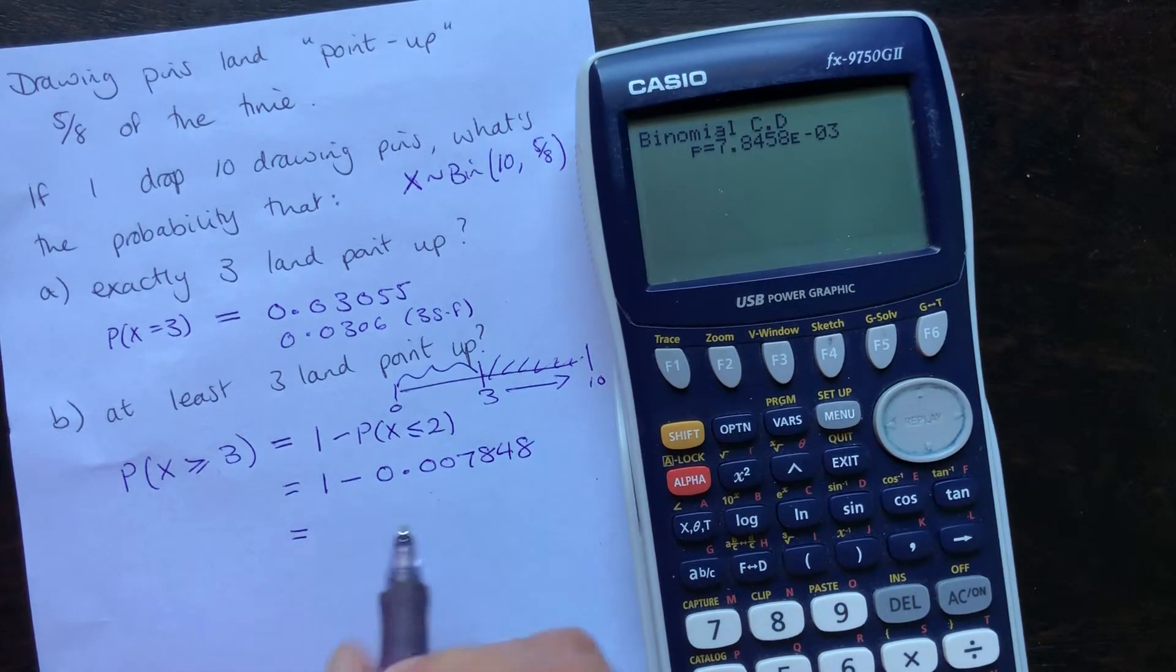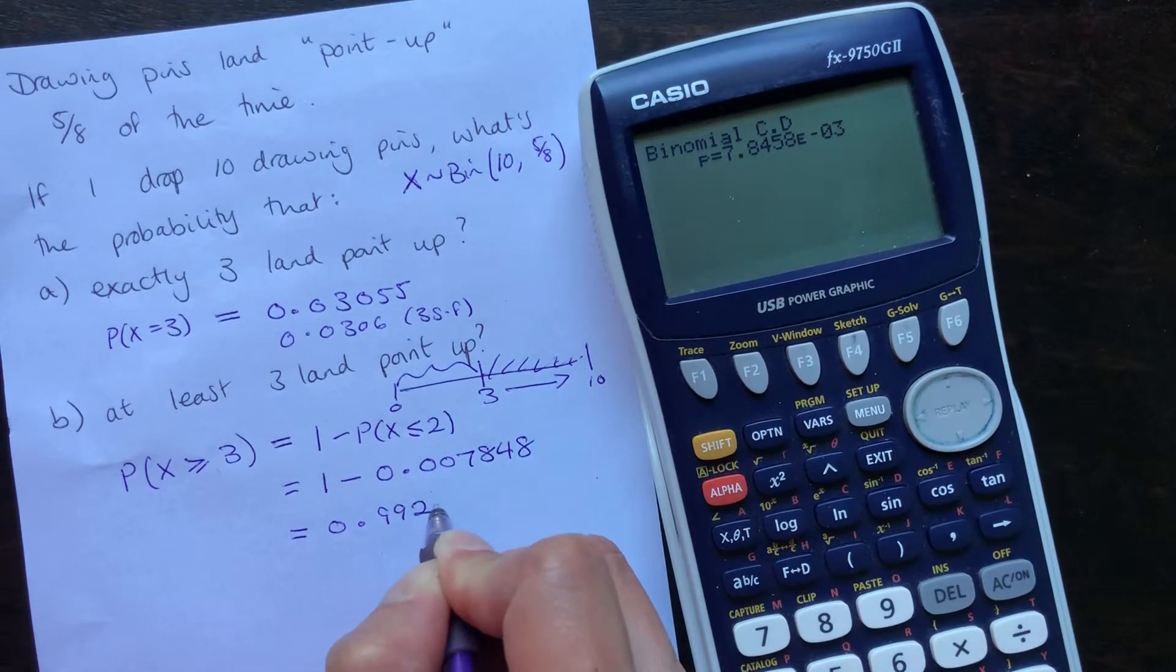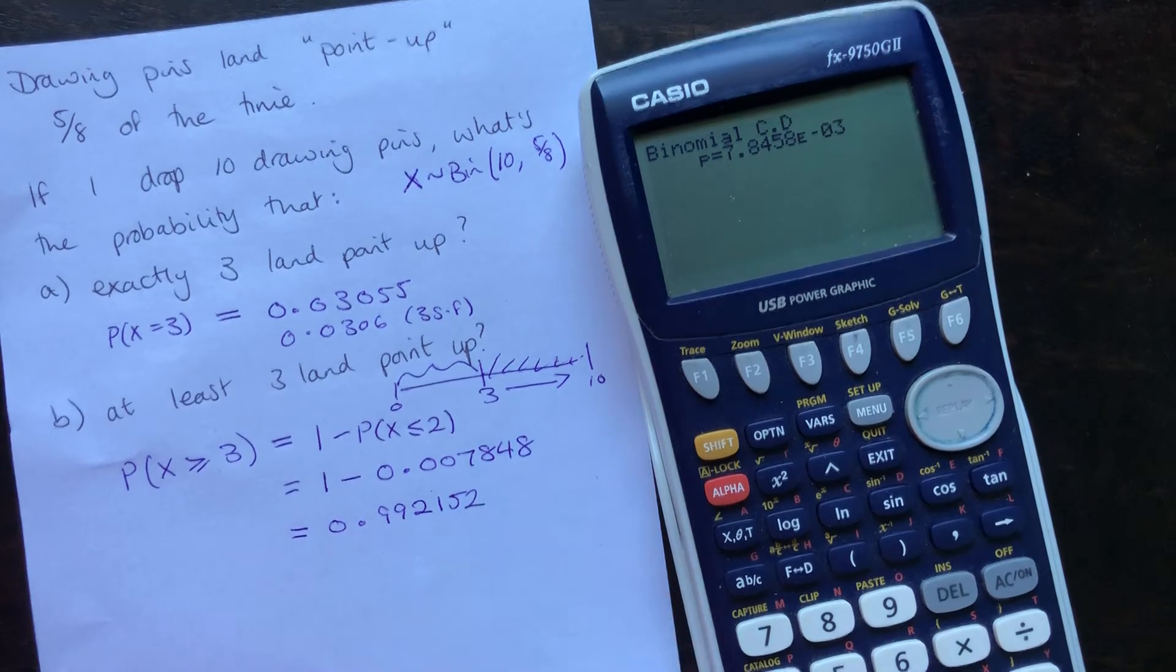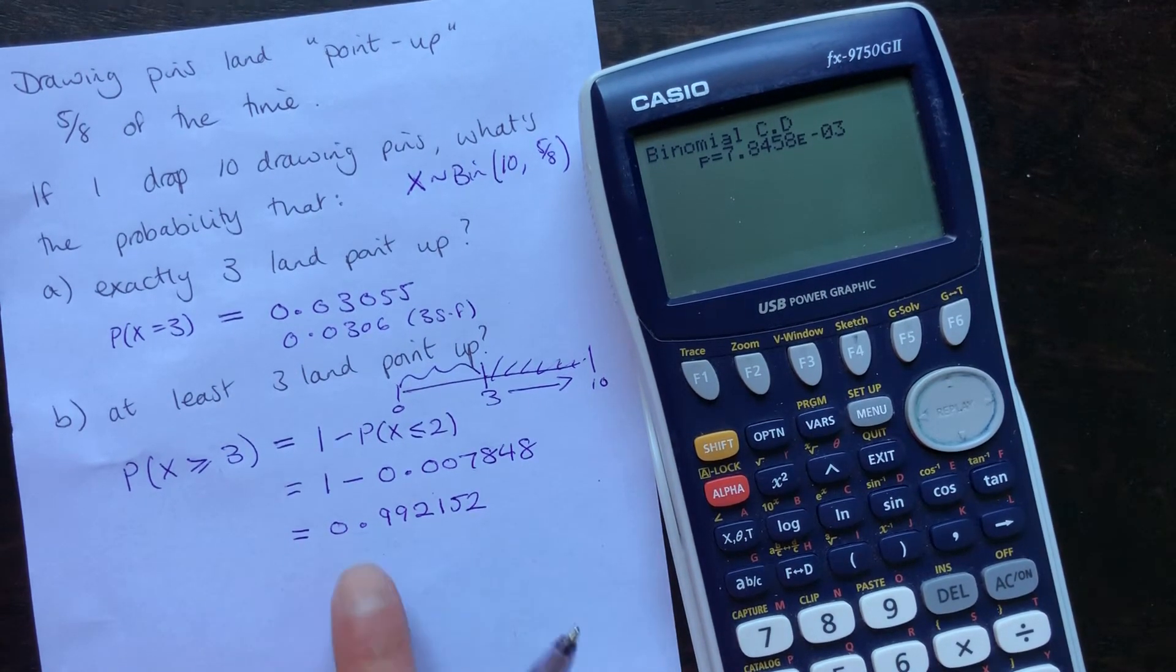Now if we do one minus that, we will get 0.9921. Sorry, I did a little mind blank. Five, two. So, the probability that X is greater than or equal to three, 0.9925.